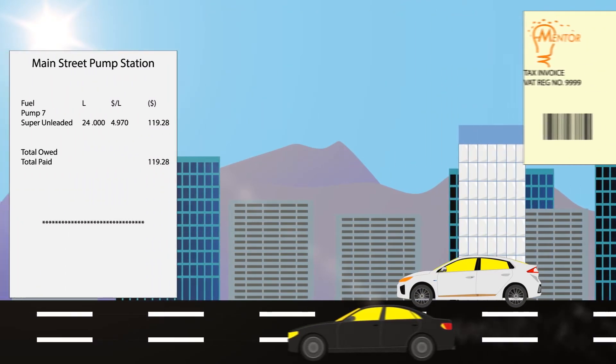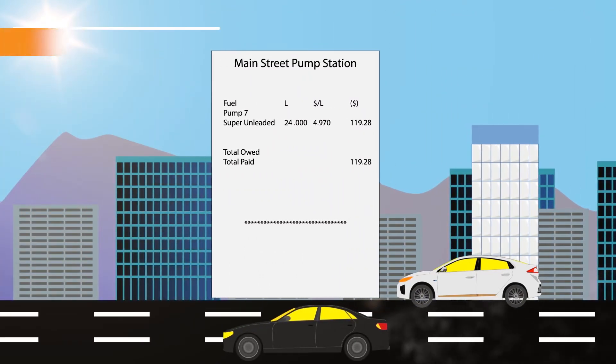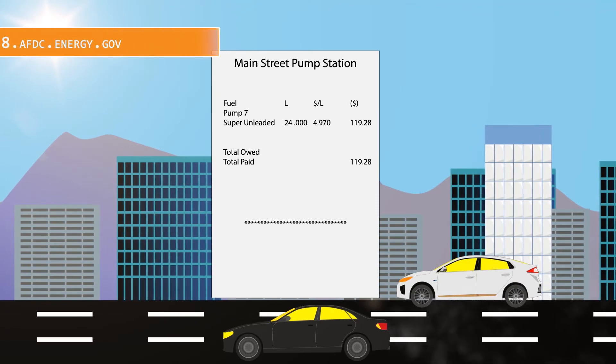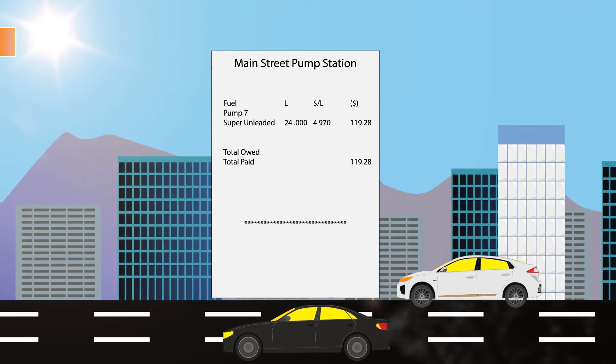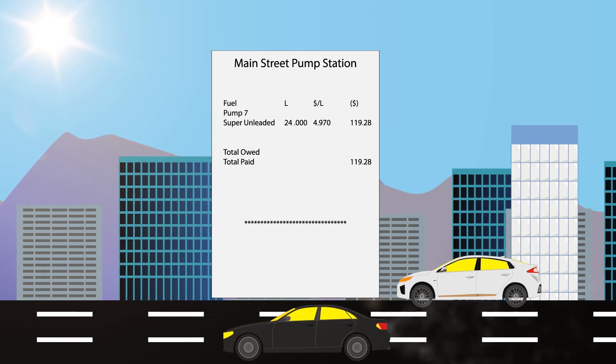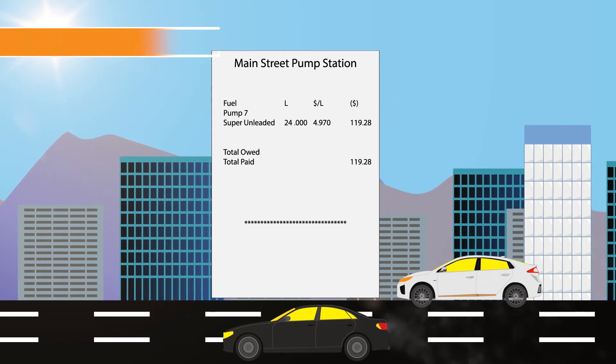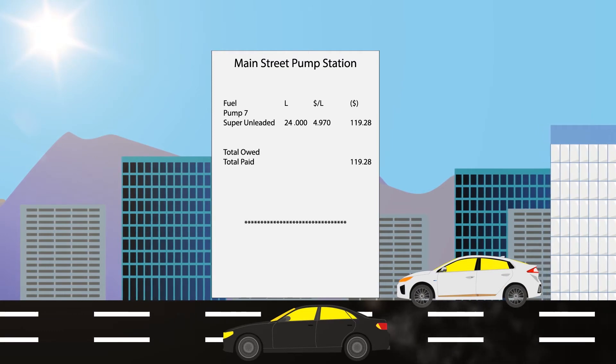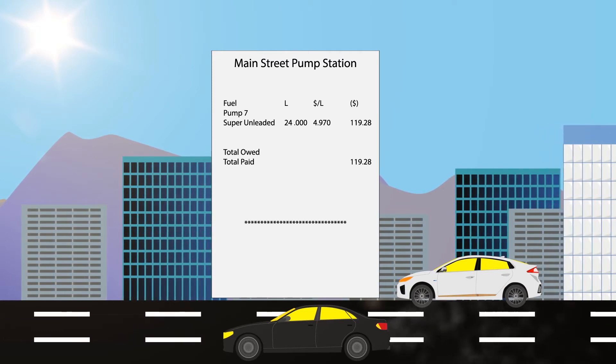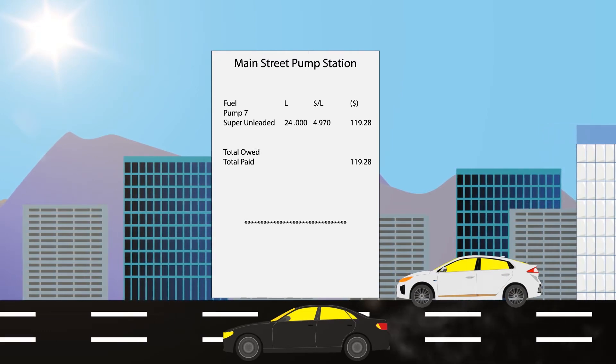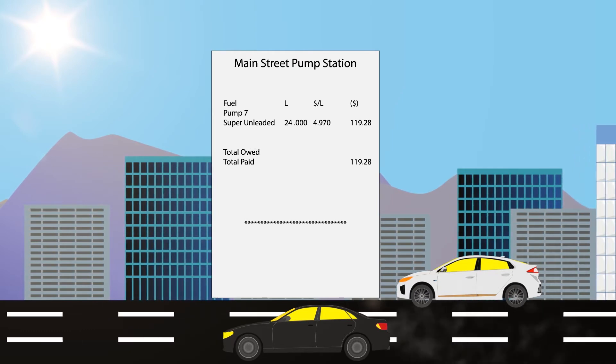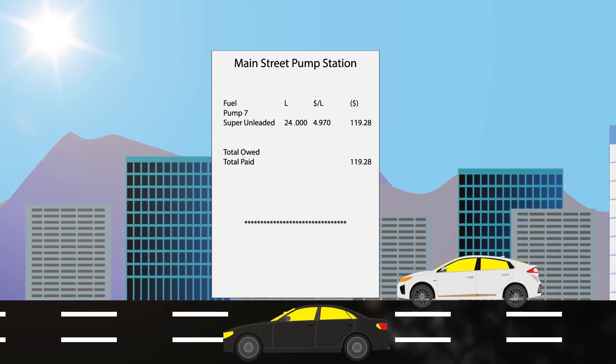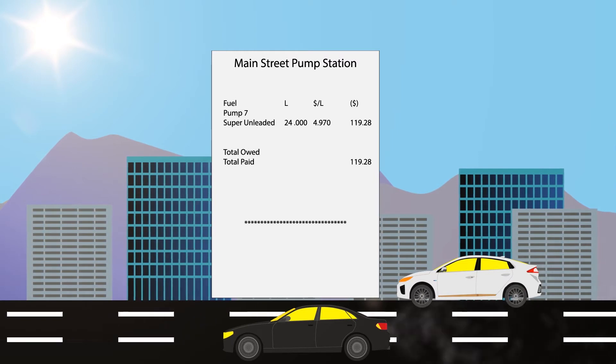An internal combustion engine can average about 8.5 kilometers per liter. To travel the same 200 kilometers, you would need about 24 liters of fuel. The current price of Super Unleaded is $4.97, which means you will spend about $119.28 on a similar trip. These numbers are rough estimates, but the cost of electricity as it stands right now is cheaper per kilometer than the price of fuel.